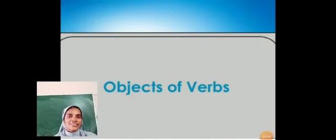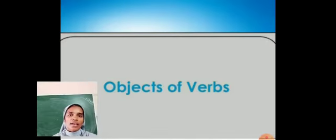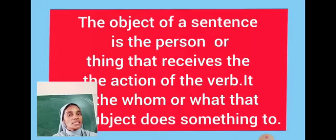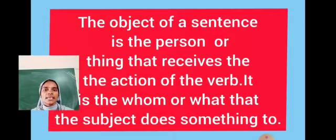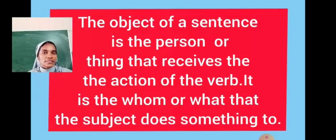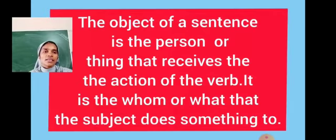Hi students, in this video we are going to see about the objects of verbs. The object of a sentence is the person or thing that receives the action of the verb. It is the whom or what the subject does something to.